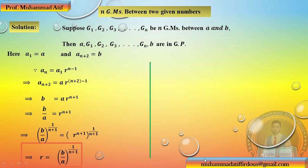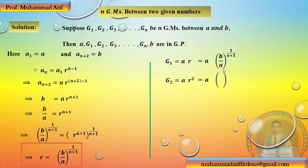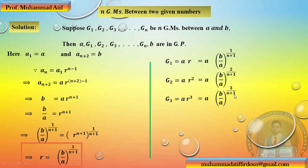Simplify کریں: A ادھر جا کے divide ہو جائے گا، دونوں طرف power 1/(n+1) لے لیں تو r = (B/A)^(1/(n+1)) آ جائے گا۔ اب g₁ = A·r، g₂ = A·r² = A·(B/A)^(2/(n+1))، اور gₙ = A·rⁿ = A·(B/A)^(n/(n+1))۔